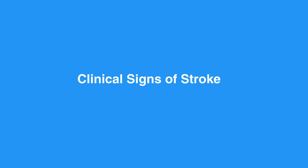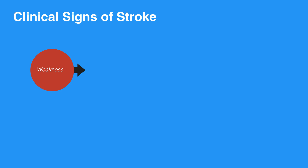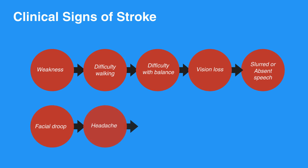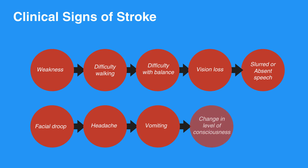Clinical signs of stroke depend on the region of the brain affected by decreased or blocked blood flow. Signs and symptoms can include weakness or numbness of the face, arm, or leg, difficulty walking, difficulty with balance, vision loss, slurred or absent speech, facial droop, headache, vomiting, and change in level of consciousness.